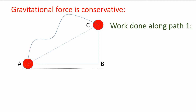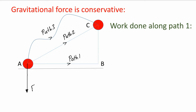Suppose there is a ball resting on a horizontal surface at point A and we want to move it to some other point C. We choose three different paths for this displacement: path 1, path 2, and path 3. We'll calculate work done against the gravitational force for all three paths and check whether they come out to be equal. The gravitational force acts downward and equals M times G, where M is the mass of the ball and G is acceleration due to gravity.